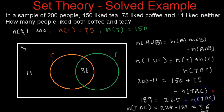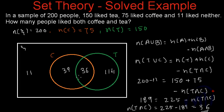The number of people who like only coffee equals 75 minus 36, which is 39. The people who like only tea will be 150 minus 36, which equals 114. So in the Venn diagram: 36 people like both tea and coffee, 39 people like only coffee, and 114 people like only tea.